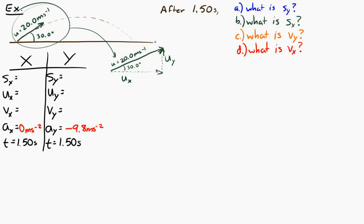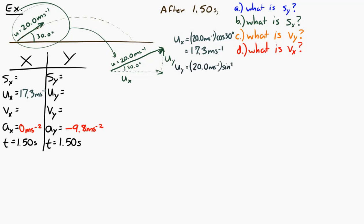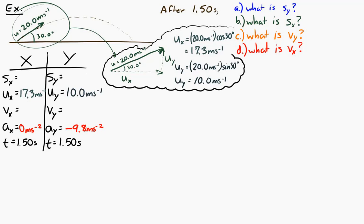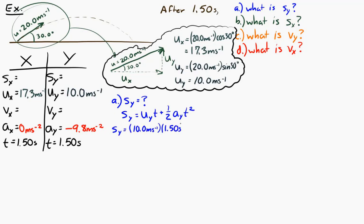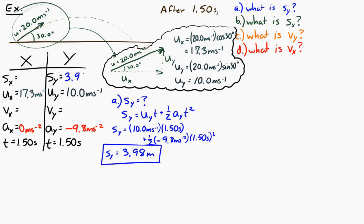Drawing a triangle, the horizontal component uses cosine — the initial horizontal velocity is 17.3 meters per second. The vertical component uses sine — the initial vertical velocity is 10 meters per second. For part A, the vertical displacement uses the equation S equals ut plus one-half at squared. Putting in the values and remembering that acceleration is downward — negative — the vertical displacement after 1.5 seconds is 3.98 meters.